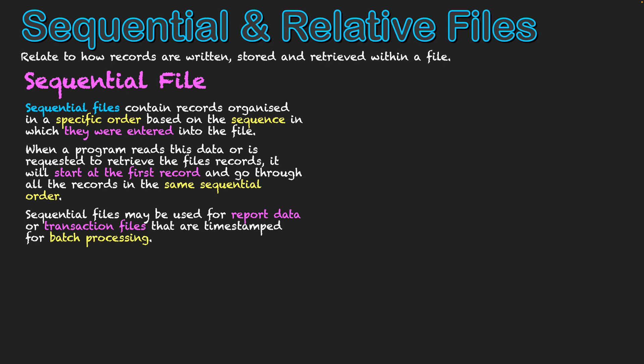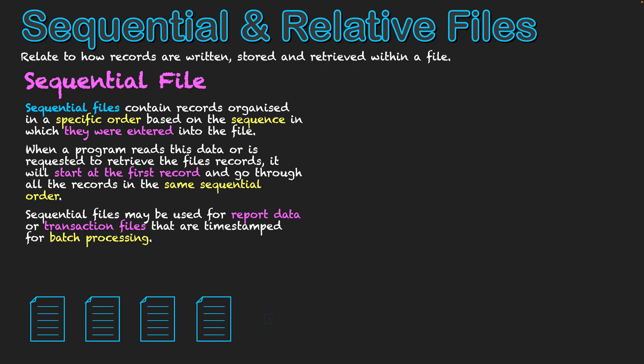Sequential files may be used for report data or transaction files which are time-stamped as part of batch processing — scenarios where we want records kept in order so they can be processed in that same order. To illustrate: if I have five records within my file and I want to find record four, I have to go through records one, two, and three in order to get to it. The system can't jump straight there; it has to go through them all sequentially.